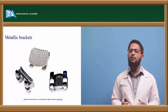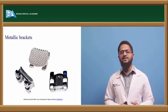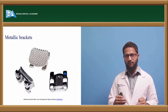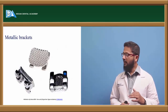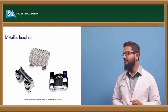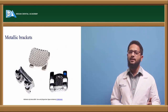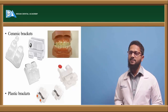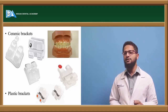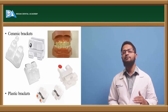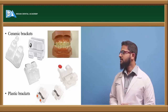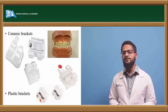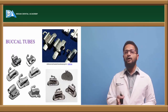The most commonly used brackets are metallic brackets, typically made of stainless steel. Their advantages include greater strength, less friction between the wire and the slot, the ability to be sterilized, and the ability to be recycled. The disadvantage is that they are aesthetically less pleasing. To overcome this, ceramic brackets were developed — aesthetically superior, but brittle, prone to breakage, and cause more friction with color changes over time. Plastic brackets were also developed for better aesthetics but similarly suffer from discoloration and increased friction with time.